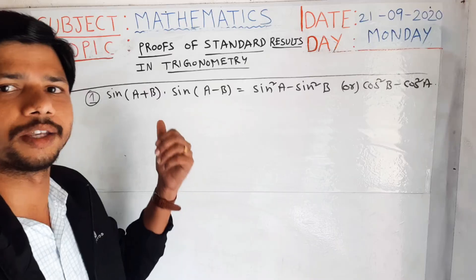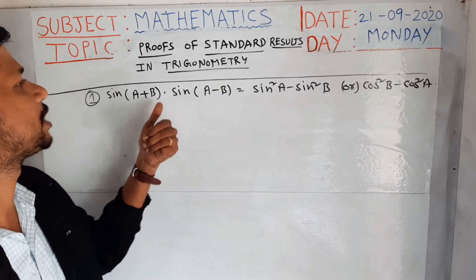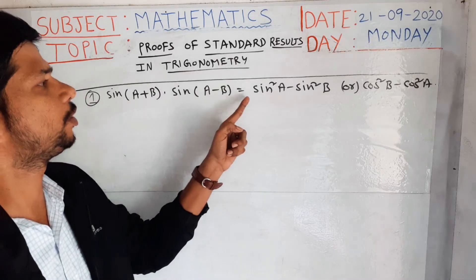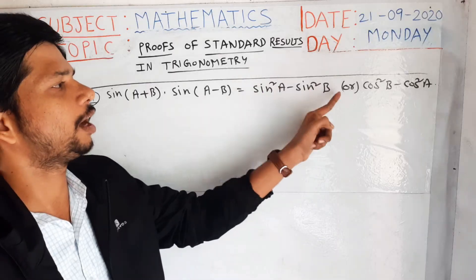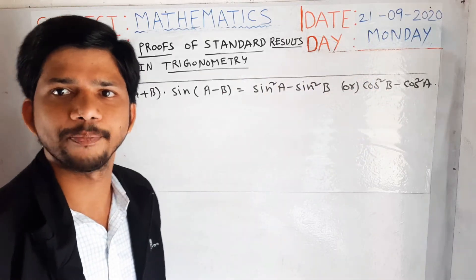Today I am going to give a small proof of sin(a+b) · sin(a-b) equal to sin²a - sin²b or cos²b - cos²a.